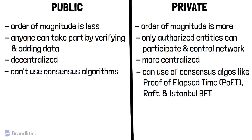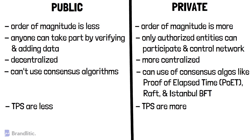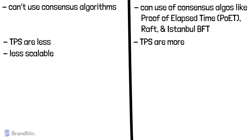Next, transactions per second (TPS) are lesser in public blockchain when compared to private blockchain. As the number of authorized participants is less in private blockchain, it can process hundreds or even thousands of transactions per second. Additionally, a public blockchain cannot compete with a private blockchain in terms of scalability, as it is slow and can process transactions only at a slow pace, whereas in a private blockchain, as only a few nodes need to manage data, transactions can be supported and processed at a much higher pace.